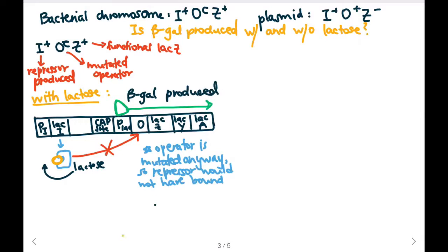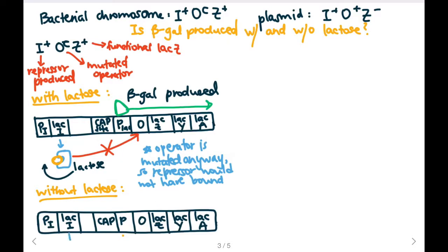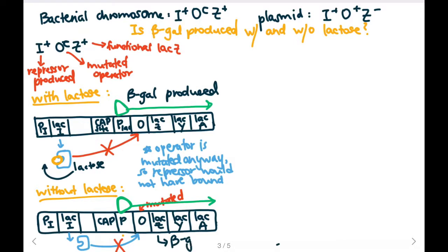Without lactose, our lac operon is going to produce a repressor protein. Without lactose, it should be able to bind to the operator — but again, it cannot because the operator is mutated. This means that RNA polymerase will still be able to bind to the promoter and transcribe all three genes because there's nothing blocking it. The repressor protein was unable to bind to the operator, so RNA polymerase is free to transcribe and beta-galactosidase will be produced.